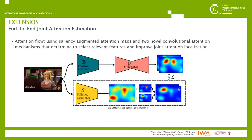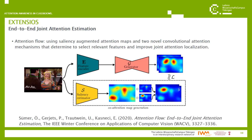To extend the machine learning approach further, we developed a mechanism to consider joint attention by using attention maps and two novel convolutional attention mechanisms that can determine and select relevant features and improve joint attention localization. The shared focus of attention can improve the interpretation of certain classroom situations and can also point out students that deviate from the majority, meaning those students are more likely not being attentive. For more details, you can look into our respective paper, which you can find under this citation.